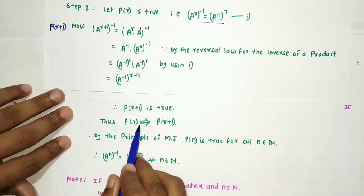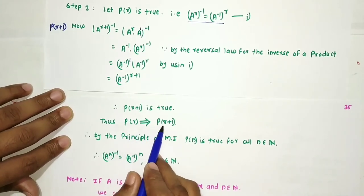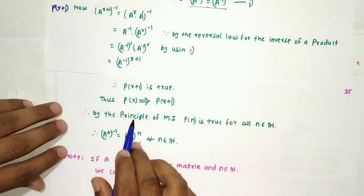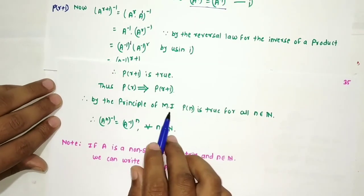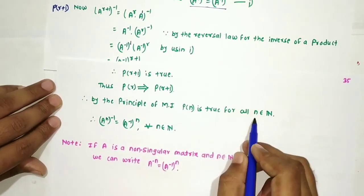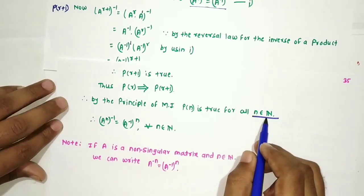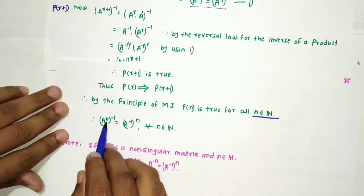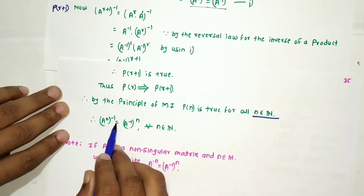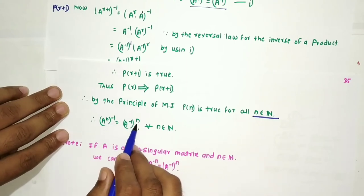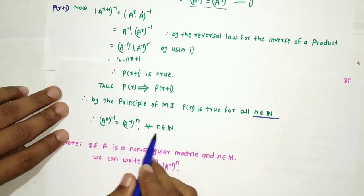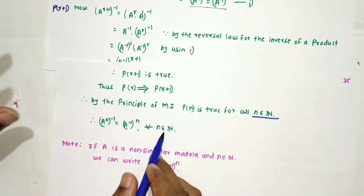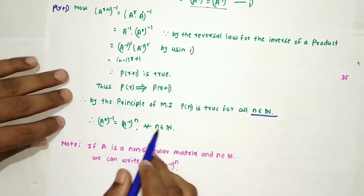Since P₁ is true and Pᵣ being true implies Pᵣ₊₁ is true, by the principle of mathematical induction Pₙ is true for all natural numbers n. Hence (Aⁿ)⁻¹ equals (A⁻¹)ⁿ for every n belonging to the set of natural numbers.